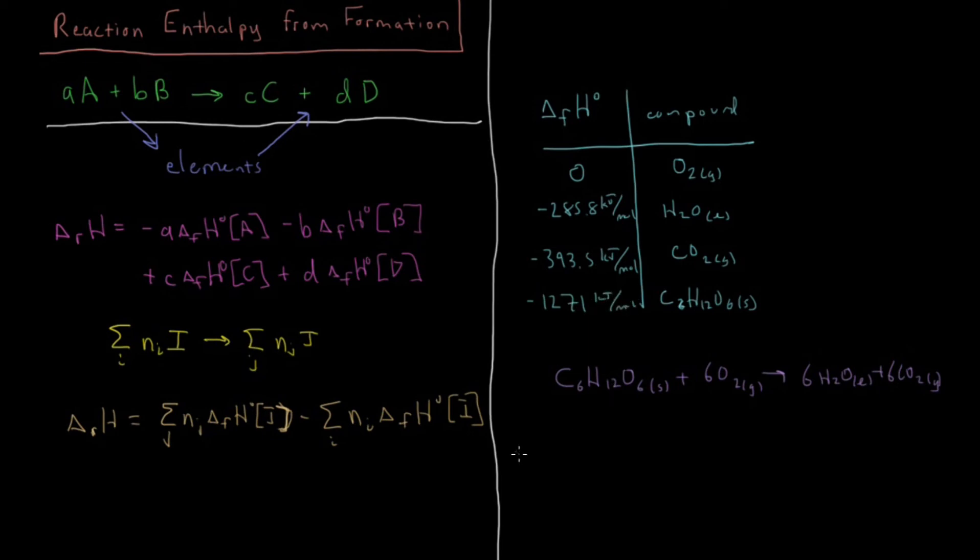So let's calculate the enthalpy for this reaction. The enthalpy of this reaction is going to be 6 moles of H2O times minus 285.8 enthalpy of formation, plus 6 moles of CO2 times minus 393.5 kilojoules per mole, minus 6 moles of O2 times its enthalpy of formation, zero.